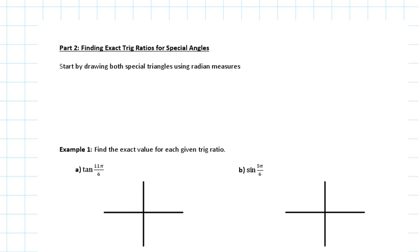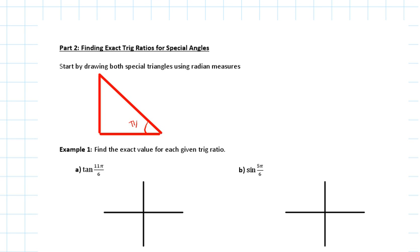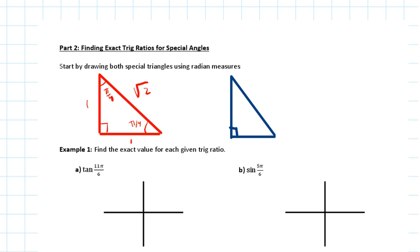Now we're looking at finding exact trig ratios for special angles. We start by drawing the two special triangles from the previous lesson. The first is the pi over 4 triangle with sides 1, 1, and square root of 2. The second has sides 1, square root of 3, and 2.